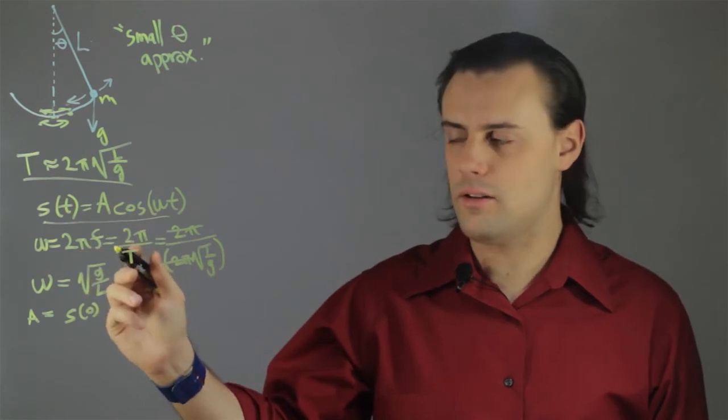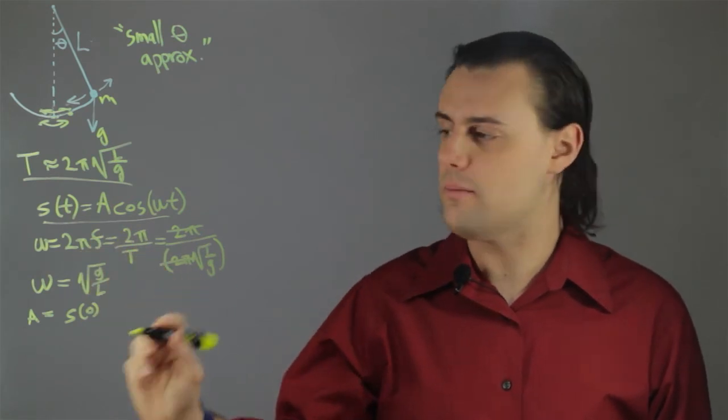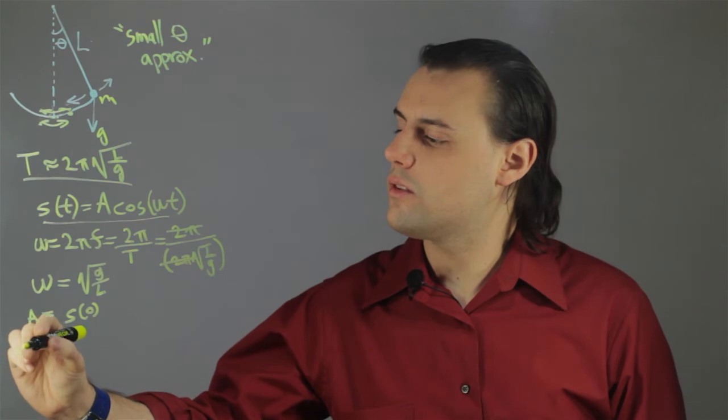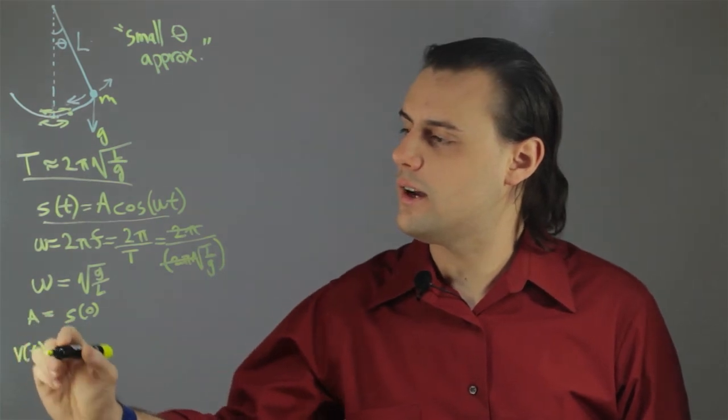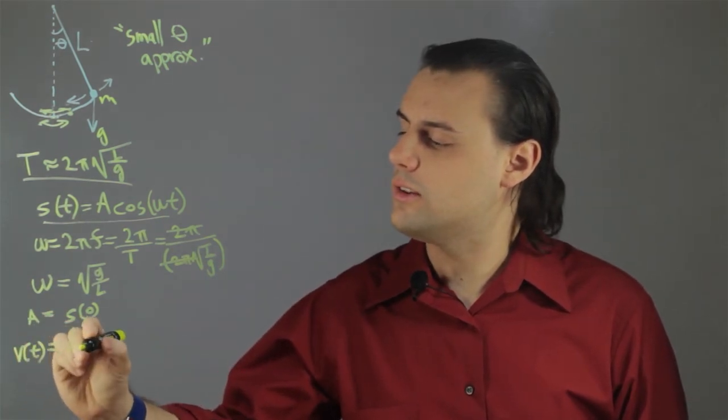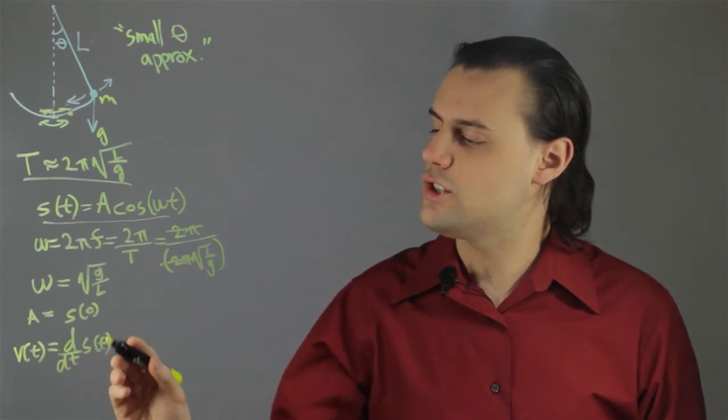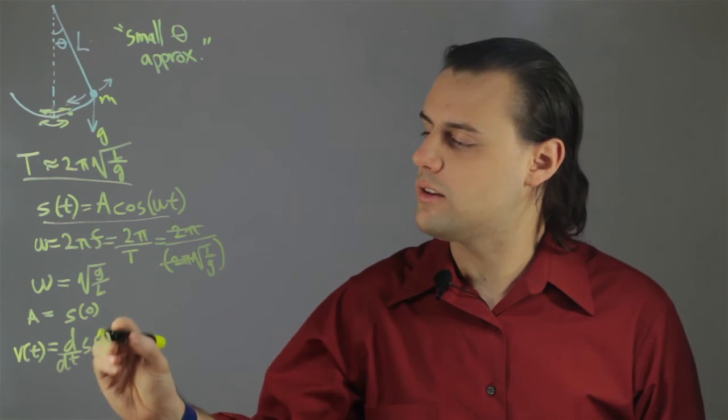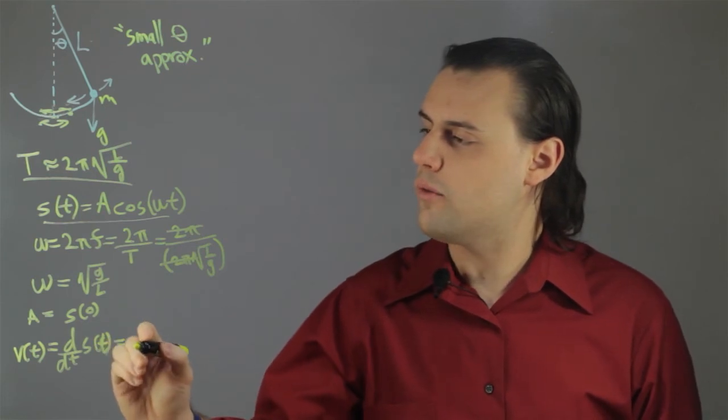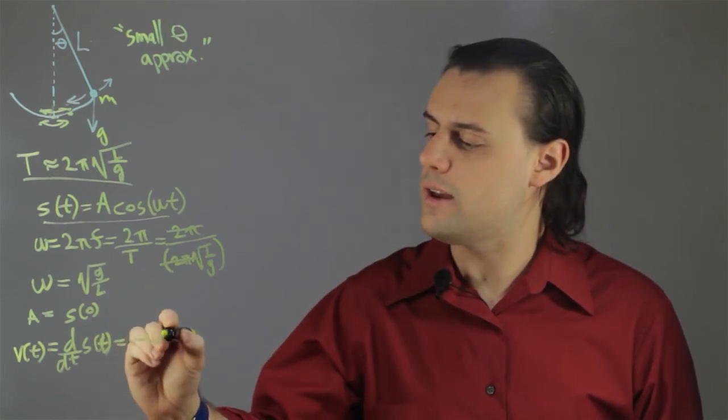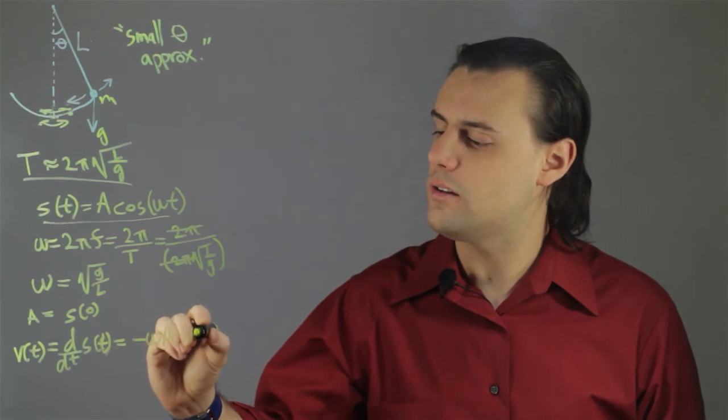I can calculate an expression for the speed. So, the velocity as a function of time is equal to the time derivative of the position equation. So if I differentiate this expression with respect to time, I end up with negative ωA sine ωt.